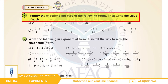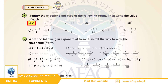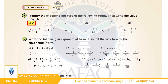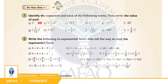بچو اس concept کو سمجھنے کے لیے exercise سے کچھ سوال حل کرتے ہیں۔ Question number 1: identify the exponent and base of the following terms, then write the value of each. (a) 7 to the power of 2 — اس term میں 7 base ہے، 2 exponent یا power ہے، اور اس کی value ہے 49۔